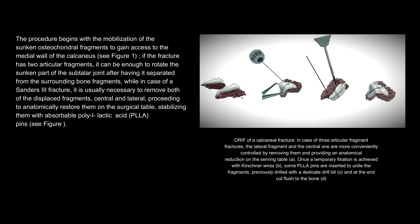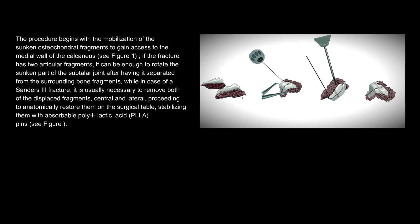In case of three articular fragment fractures, the lateral fragment and the central one are more conveniently controlled by removing them and providing an anatomical reduction on the serving table. Once a temporary fixation is achieved with Kirschner wires, some PLLA pins are inserted to unite the fragments, previously drilled with a dedicated drill bit, and at the end cut flush to the bone.